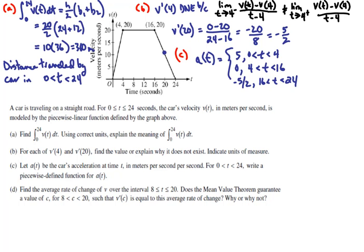In part d, we want to find the average rate of change of v over the interval from 8 to 20. And that's just the slope of the tangent line connecting (8, 20) and (20, 10). So the average rate of change is equal to the change in velocity over the change in time, which is (10 - 20) / (20 - 8), and that happens to be negative 5/6.